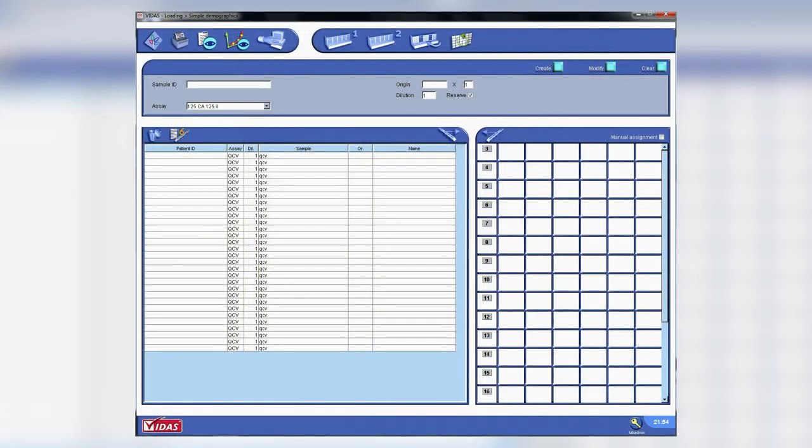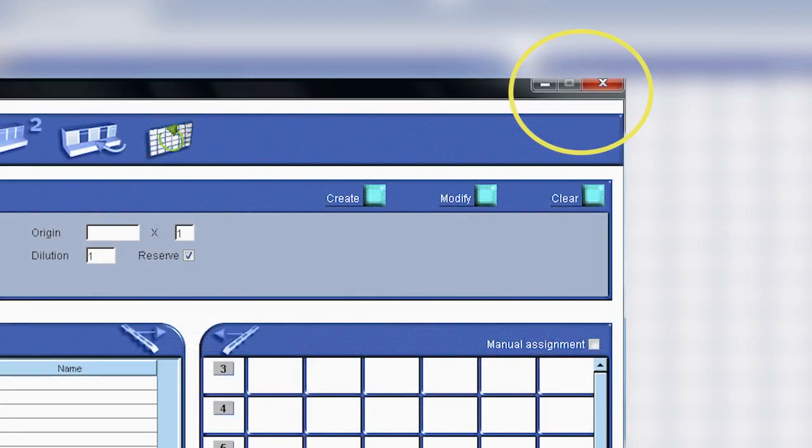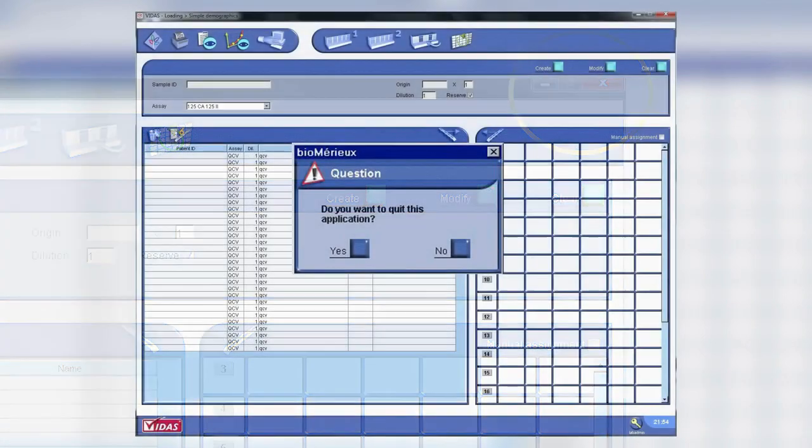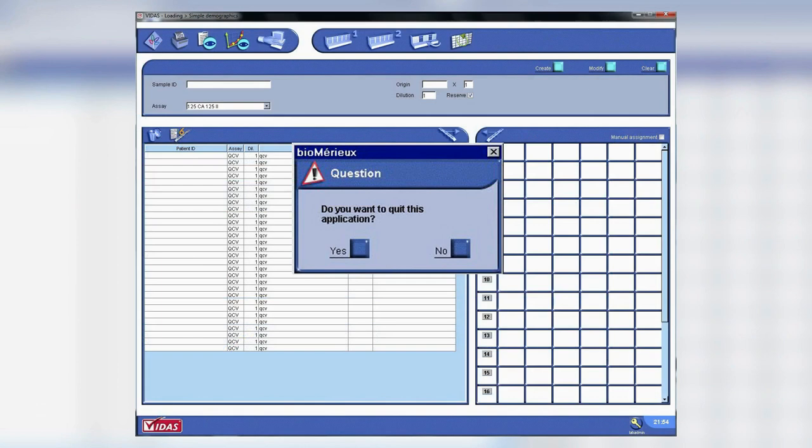To power off the Analyzer, click the red close icon in the top right-hand corner of your work window. The following dialog box displays. Click Yes. The Windows desktop displays.